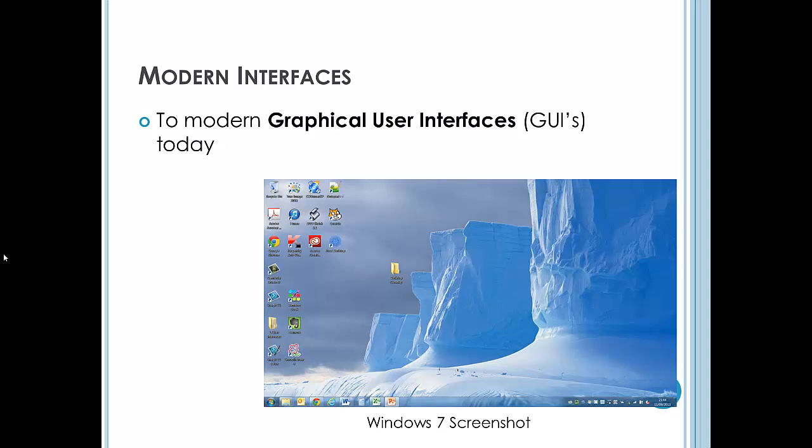Whereas if we look at a modern, here's a screenshot of my desktop at home, this is what they call a GUI, a graphical user interface. Now this may sometimes be referred to as a WIMP system, but more about that in a little bit. What you'll see is that there's little icons there that the user can select and interact with to perform various operations and functions.